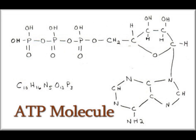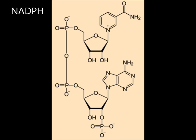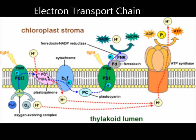At the end of the electron transport chain, NADP+ molecules pick up the high-energy electrons and hydrogen ions to form NADPH. This molecule is able to carry the high-energy electrons to the second stage of photosynthesis.